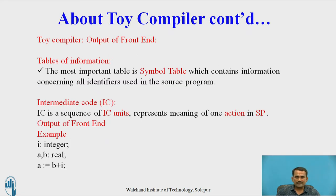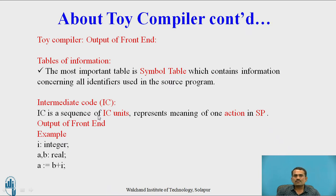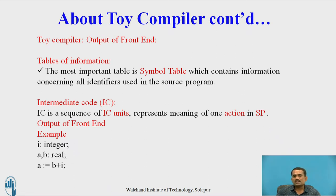The TOY compiler output of the front end — after following these steps, the table of information it contains: the most important table is the symbol table, which contains information concerning all identifiers used in the source program. After that, we get the intermediate code, that is IC. IC is a sequence — intermediate code is a sequence of IC units that represents the meaning of one action in the source program.